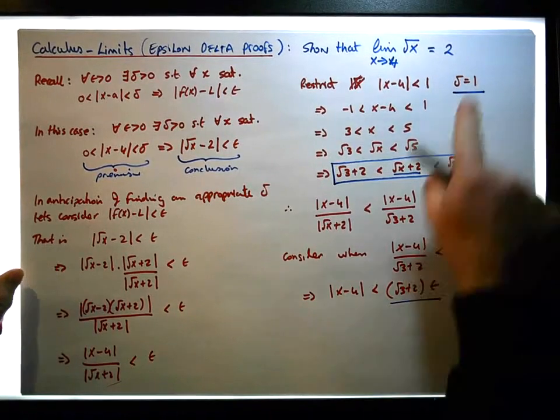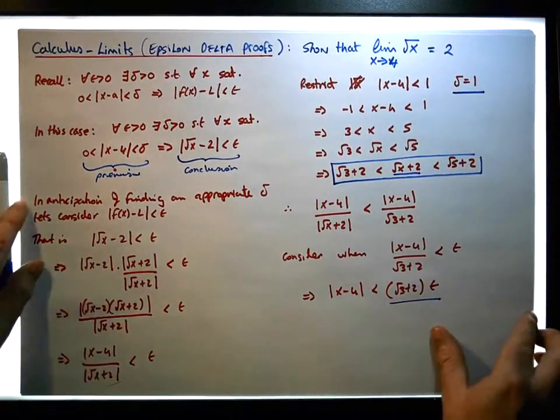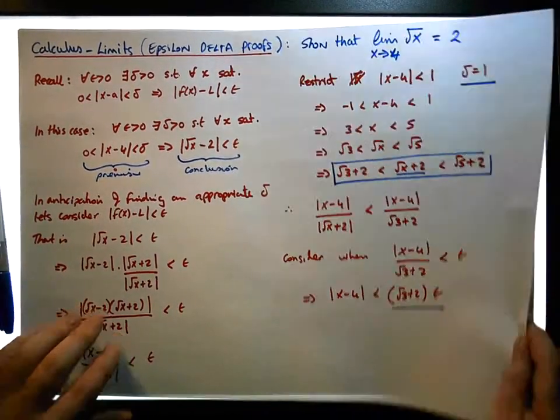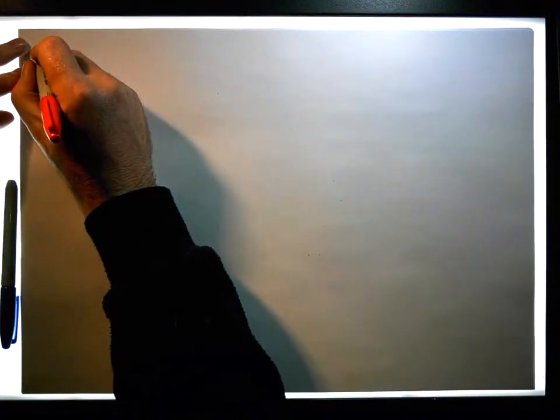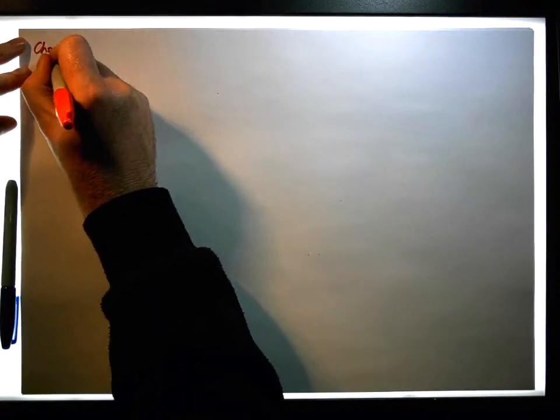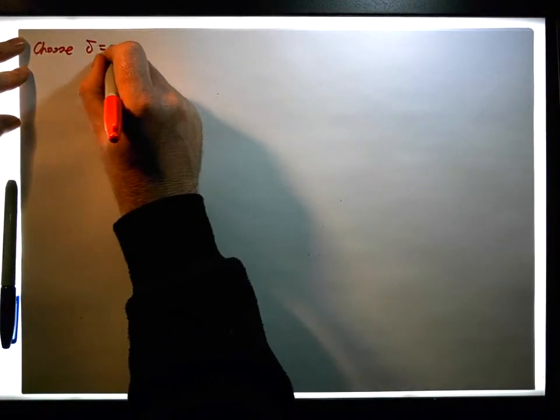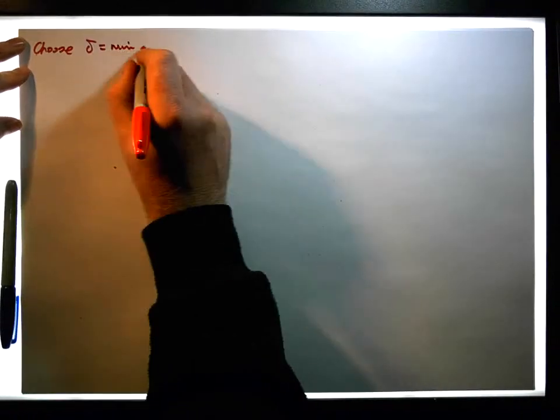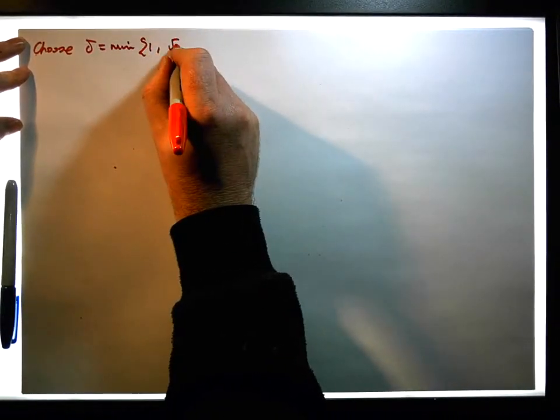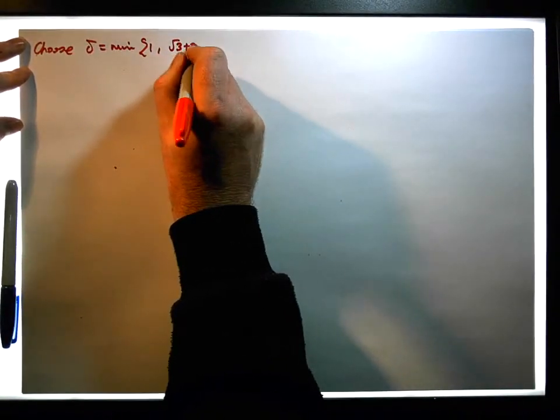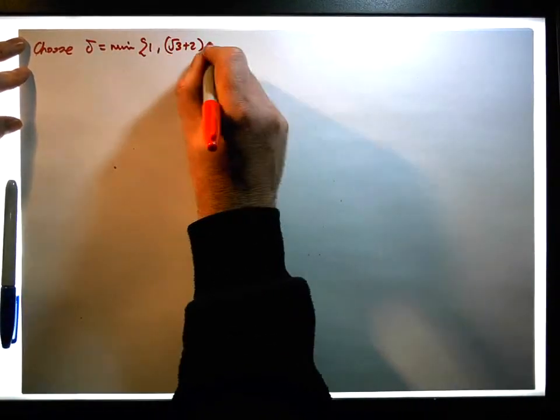So let's choose the minimum, and now do this particular proof. We're going to choose delta to be equal to the minimum between one and the square root of three plus two times epsilon.